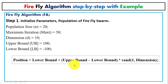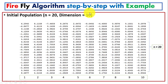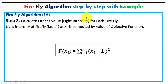The position for each firefly is generated randomly using the equation: lower bound plus (upper bound minus lower bound) times a random value. When computed in MATLAB, this gives the initial population generated for 20 fireflies having 10 dimensions.